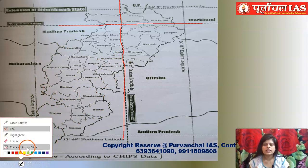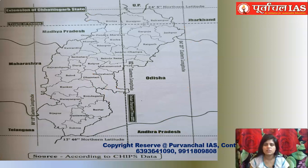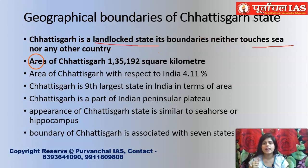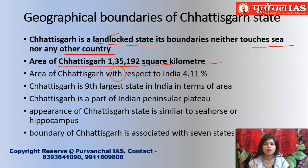Now we need to see which states share a boundary with Chhattisgarh. Chhattisgarh is surrounded on all sides by states only — this is the meaning of a landlocked state. Whenever a state is landlocked, its boundary does not touch any sea, water body, or international border. Chhattisgarh does not touch the Arabian Sea, the Bay of Bengal, or any international border — that is why it is a landlocked state.